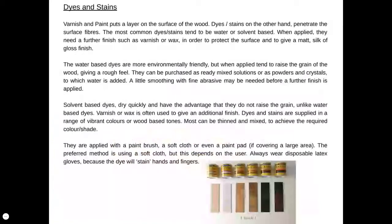Another finish is dyes or stains. Dyes or stains penetrate into the fibres of the timber — they are not a layer on top like varnish. I often see students applying a stain and then wanting to sand it away, but that won't work. Once it's on, it's on. You can use dyes or stains to provide different colours and aesthetic finishes, and you can get them in various shades of other timbers — for example, applying an oak or mahogany dye to cheap pine to make it appear like a more expensive timber.